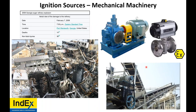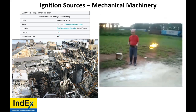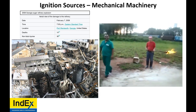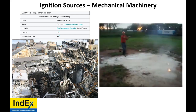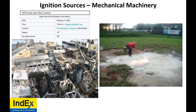Regarding ignition sources from mechanical machinery: the 2008 Georgia sugar refinery explosion killed 14 and resulted in 36 fatalities. Sugar dust built up on a conveyor, the bearings overheated, and caused ignition of the sugar dust. This is why there are ATEX and IECEx-rated mechanical machinery — because it is a potential source of ignition. Remember: a flame has a lower ignition energy than static electricity.